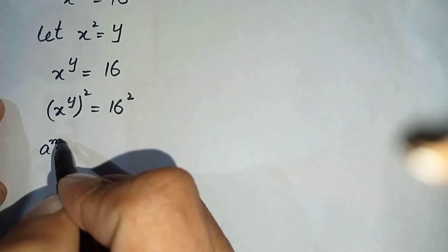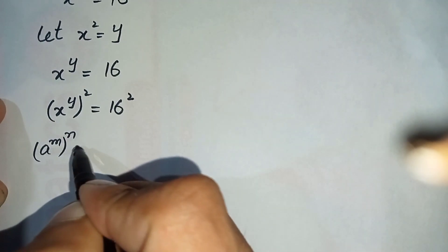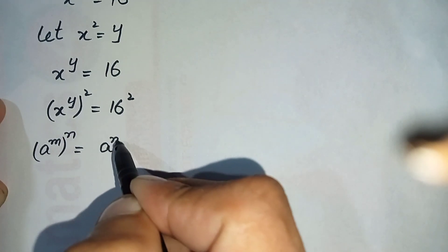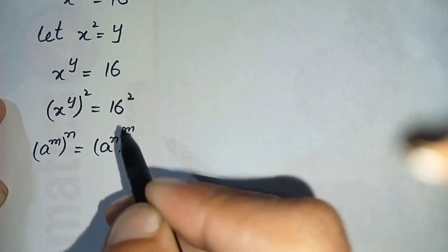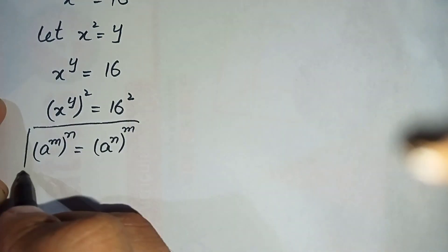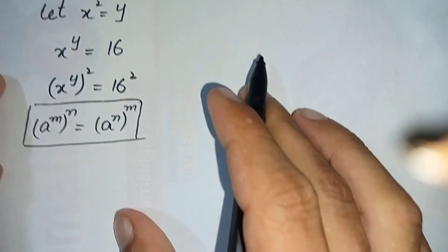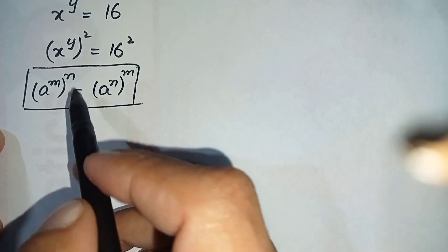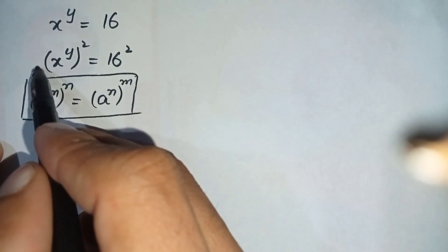The famous exponential property is: a raised to the power m, whole raised to the power n, can also be written as a raised to the power n, whole raised to the power m.